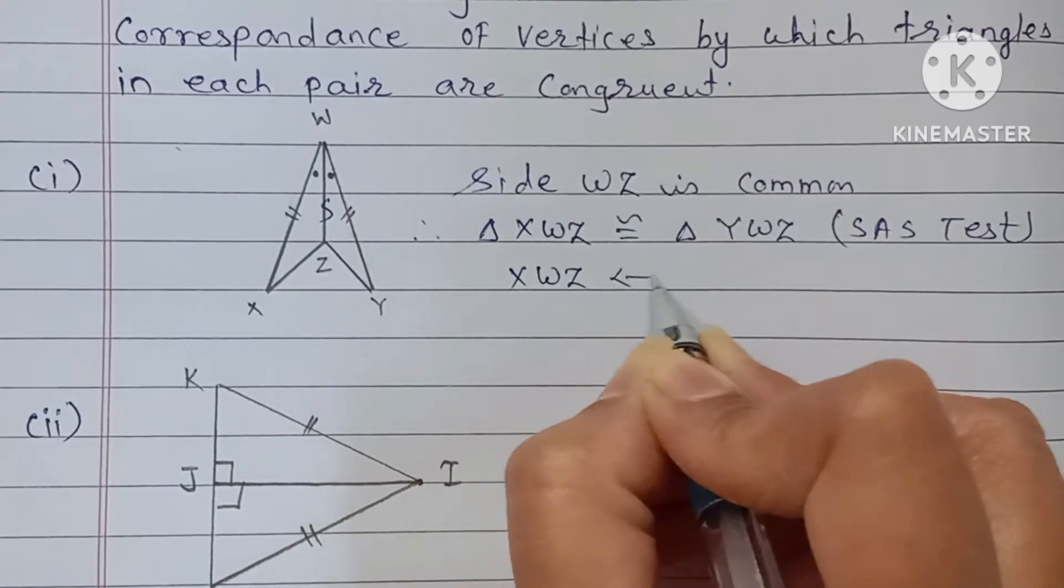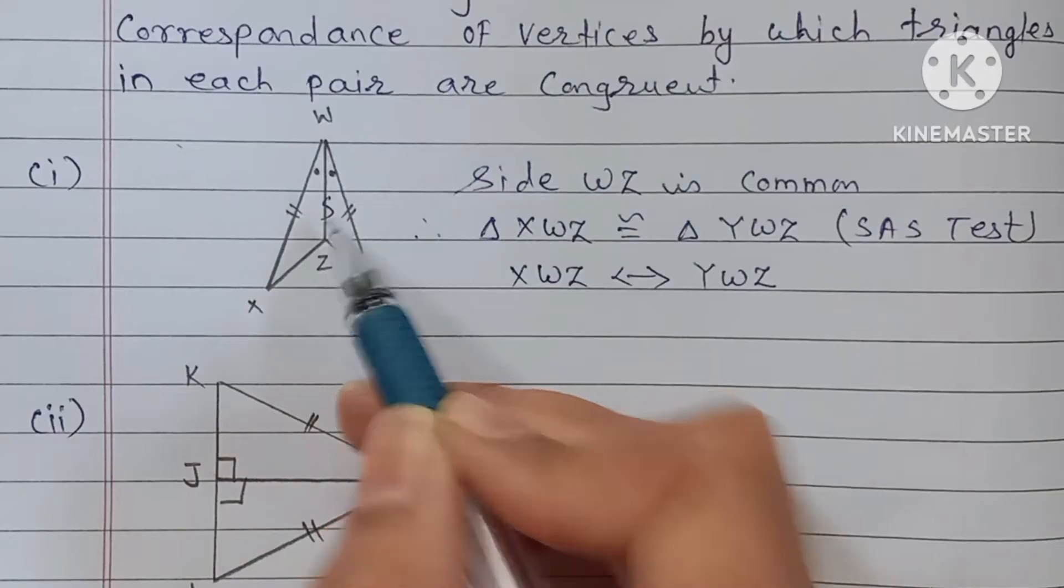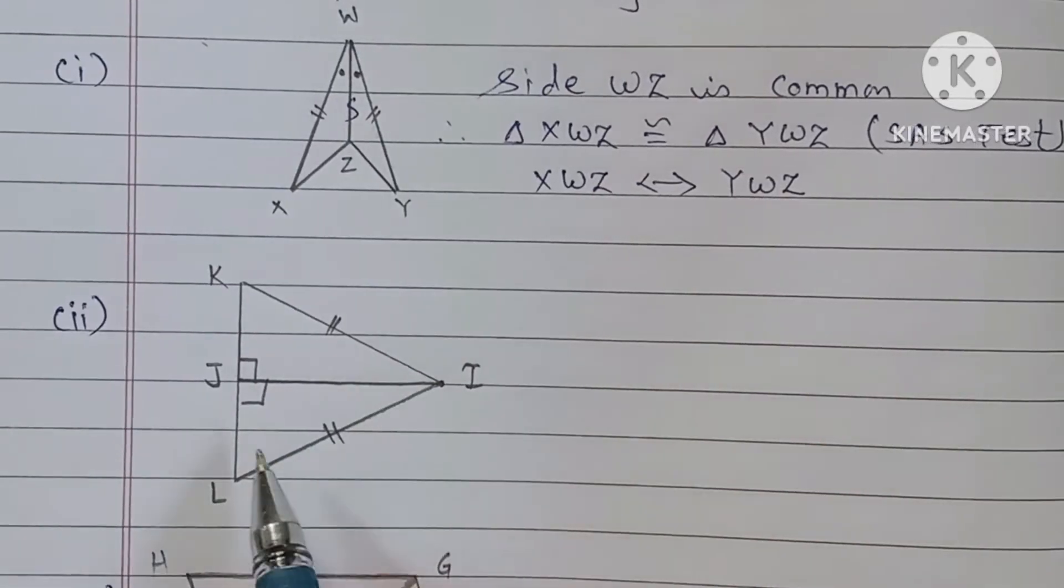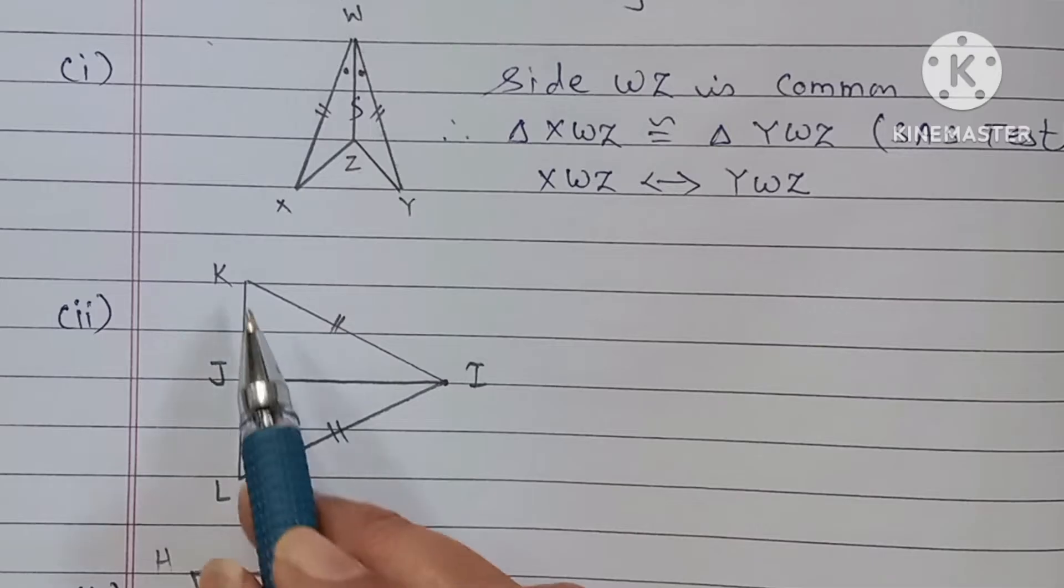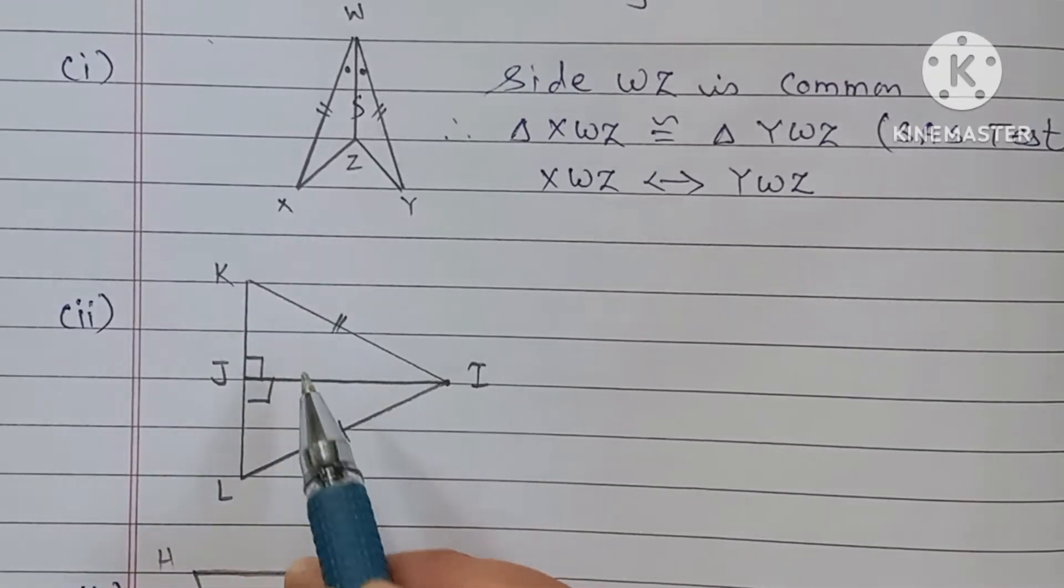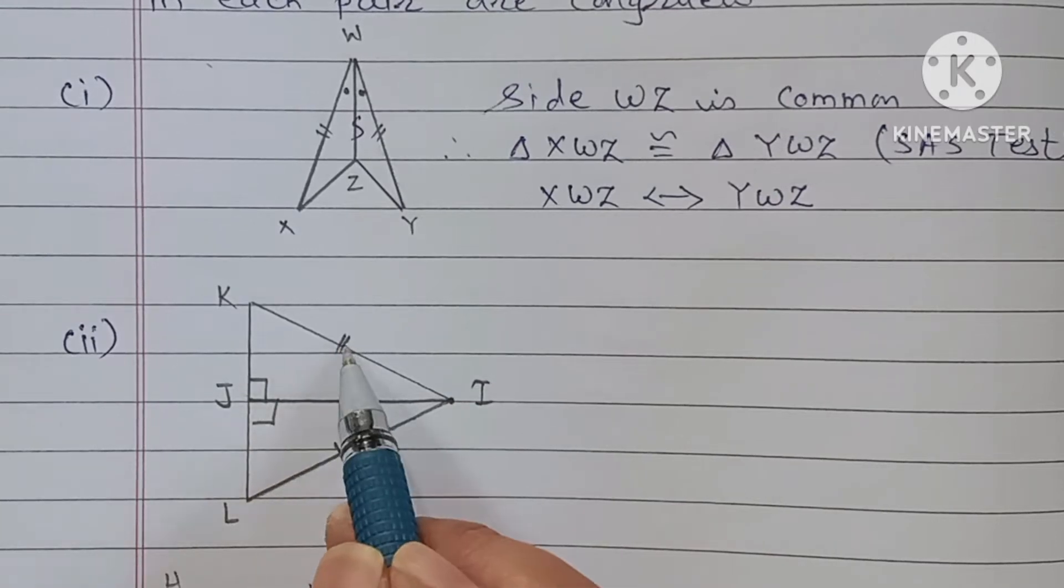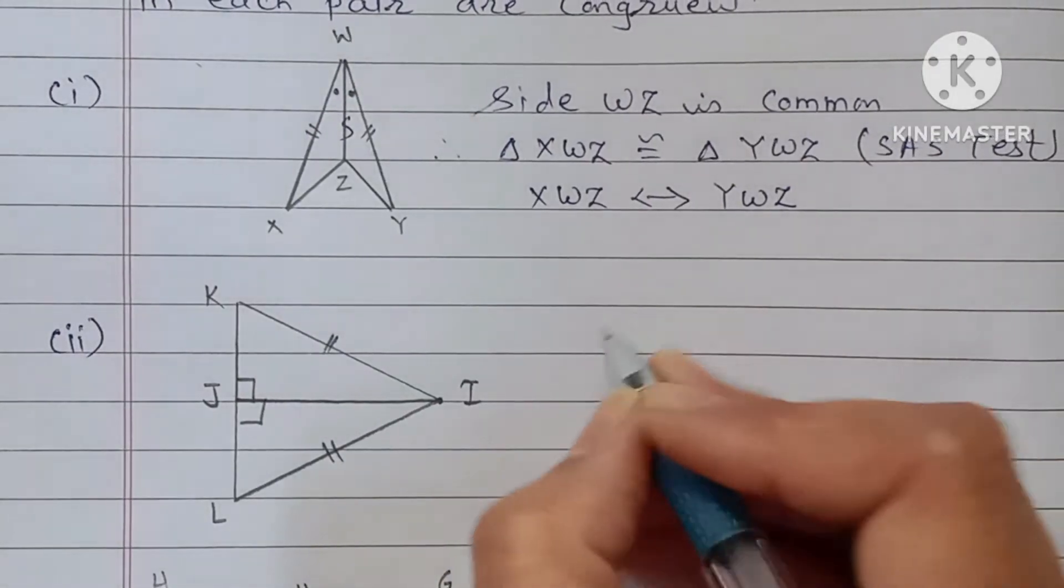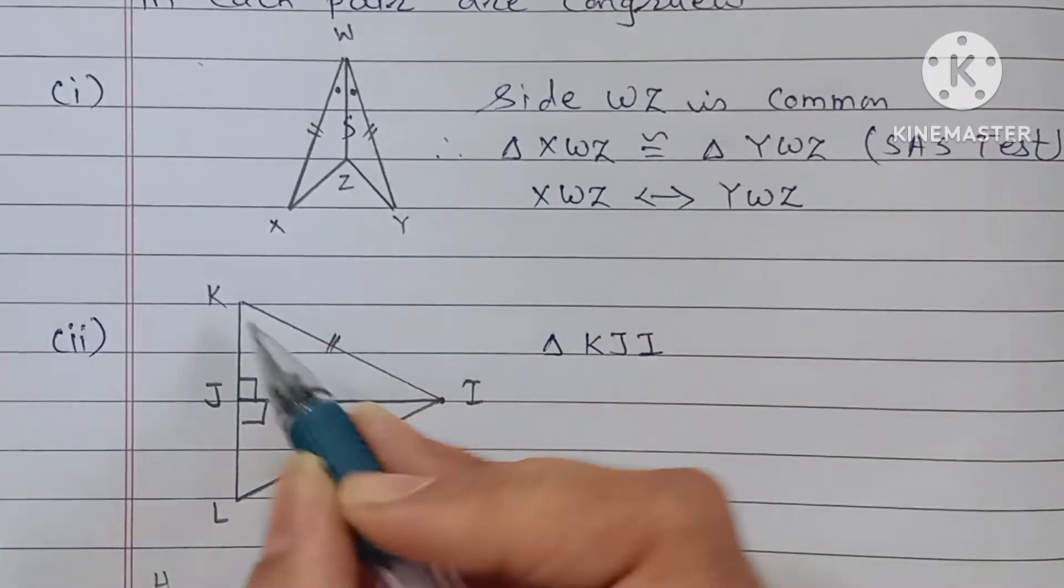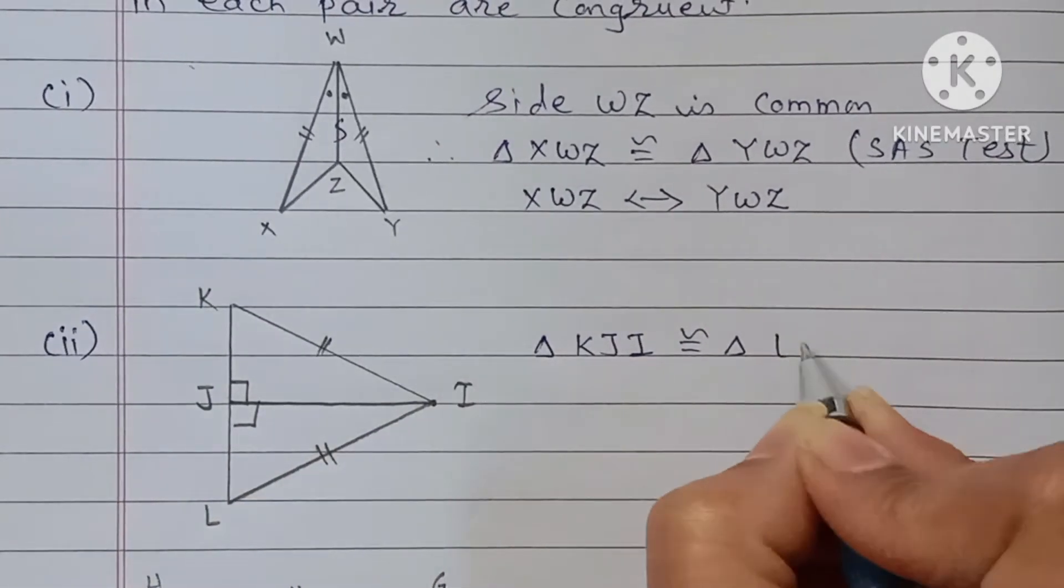In the second figure, triangle JKI and triangle LJI. This is a right-angle triangle and one side is common. This side is hypotenuse. See, this is 90 degrees, this is hypotenuse. Triangle KJI is congruent with triangle LJI by which test? Hypotenuse-side test.